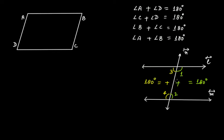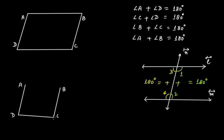Using this property, if we focus on angle D and angle C in the parallelogram, we consider the two parallel lines AD and BC with AB as the transversal. Since the transversal intersects the two parallel lines in two distinct points, angle D and angle C form a pair of internal angles on the same side of the transversal.